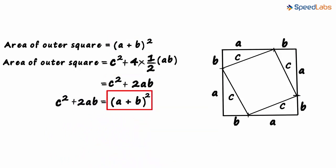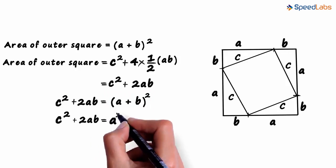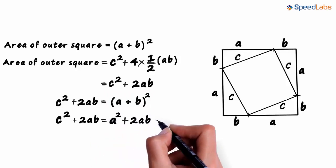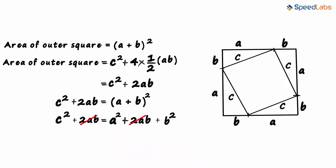And using the identity for (a + b)², we write this as c² + 2ab = a² + 2ab + b². And canceling out 2ab from both sides,